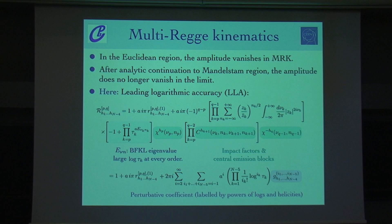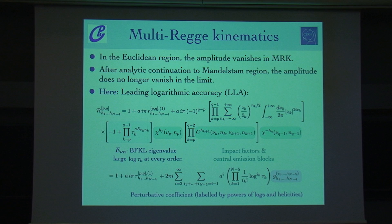Doing the weak coupling expansion, at each order I get large logs because tau equals zero. What I'm interested in is the coefficients that multiply the logs, labeled by the powers of the logs and the helicity configuration. The helicities enter through the emission vertices, while the powers of the logs come from the BFKL eigenvalue.